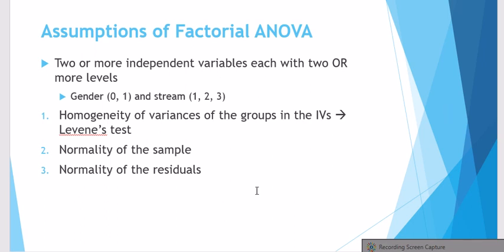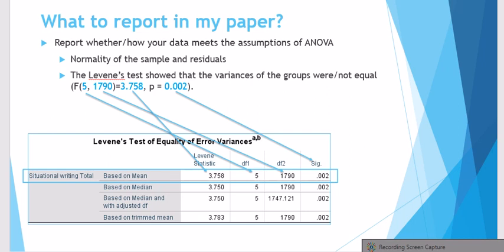The second one is the homogeneity of variances of the groups in the independent variables, and we're gonna test this through the Levene's test of equality or homogeneity of error variances. The normality of the sample, which we have talked about in a lot of details in other videos, and the normality of residuals, which I discussed in one of the ANOVA videos.